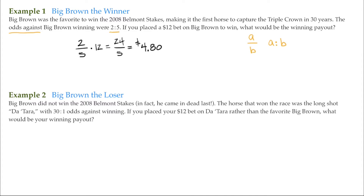Now to read these odds — 2 to 5 — that means for every $5 you bet, if you win, you're going to get $2 back.